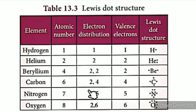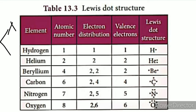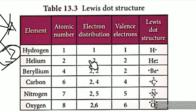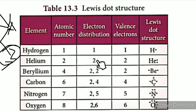Now we will create a Lewis Dot Structure table with columns: element, atomic number, electron distribution, valence electrons, and Lewis Dot Structure. Hydrogen has atomic number 1, electron distribution of 1, and valence electron of 1 — shown as one dot. Helium has atomic number 2, electron distribution K=2, and valence electrons of 2 — the K orbit is filled, shown as two dots.